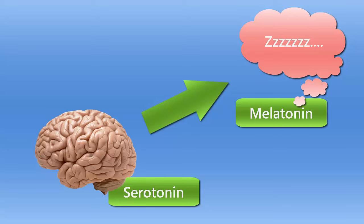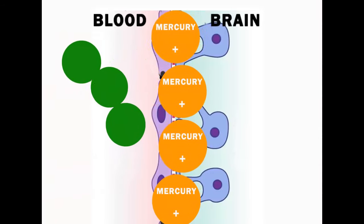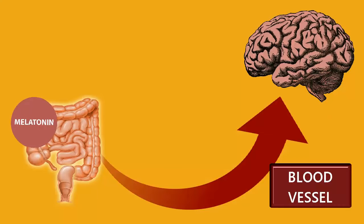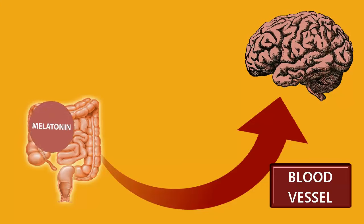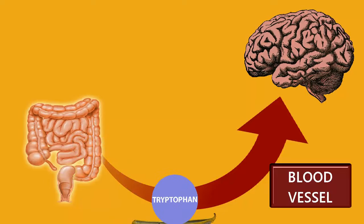A study was done in California prisons by Steven Schoenthaler, with the help of then-Governor Arnold Schwarzenegger, regarding sugar. It was found that restricting sugar significantly decreased incidences of violence. Melatonin, which is our sleep neurohormone, is created from serotonin inside the brain. You cannot take melatonin and have it cross the blood-brain barrier; it has to be broken down into tryptophan and then build itself back up to melatonin inside the brain.